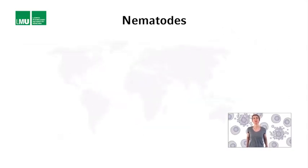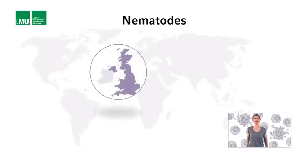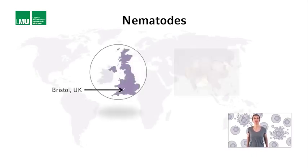C. elegans and related species are found all over the world. The one that Sidney Brenner used for his studies, and that the C. elegans community is still using today, was apparently isolated on a mushroom farm in Bristol, UK.